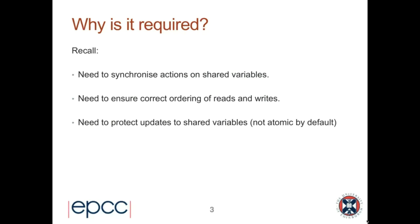We need to synchronize actions on shared variables because by default threads inside a parallel region are executing the block of code asynchronously, without regard for what other threads are doing. That means we often need some mechanism to ensure the correct ordering of reads and writes to shared variables. In particular, we need to protect updates to shared variables which are not atomic by default — where a thread reads, modifies, and writes a variable — ensuring only one thread at a time performs that update.